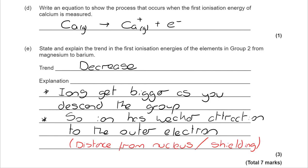And that means that there is a weaker attraction to the outer electron. You can also talk there in terms of distance from nucleus, greater shielding, and all of these things lead to the idea that it's easier to lose that outermost electron. That takes us to the end of this question. Thank you for listening.